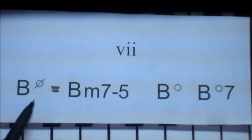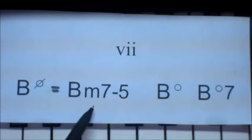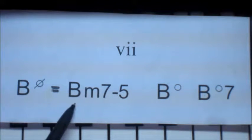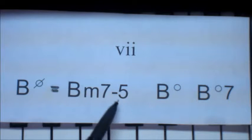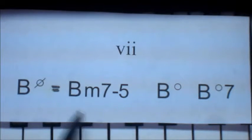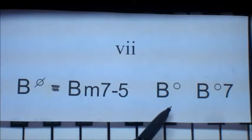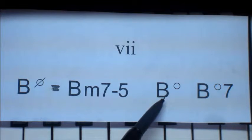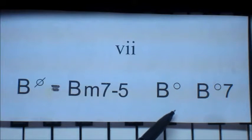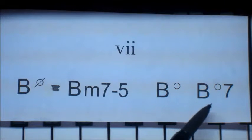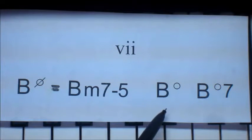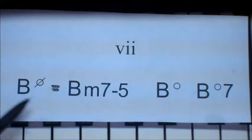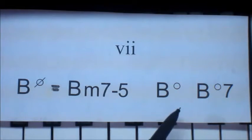Publishers have a problem using that symbol, and many will use an alternate that is technically wrong but gets positive results — they say: make it minor, add the 7th, then flatten the 5th. But as soon as you flatten the 5th on a minor chord, you have a diminished chord — so that's misleading. The full-blown diminished symbols are B diminished or B diminished 7th, both interchangeable. You may also see B dim or B dim 7th. The circle symbols tend to be more favorable as they take up less room than printing D-I-M.